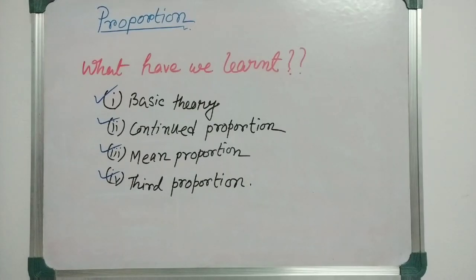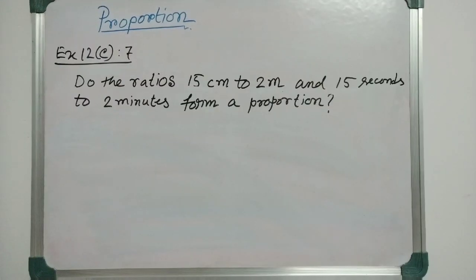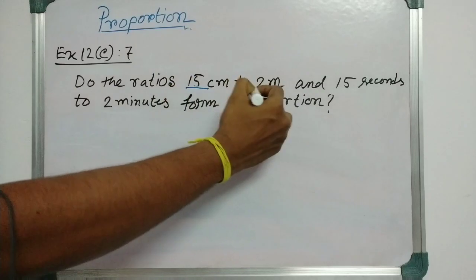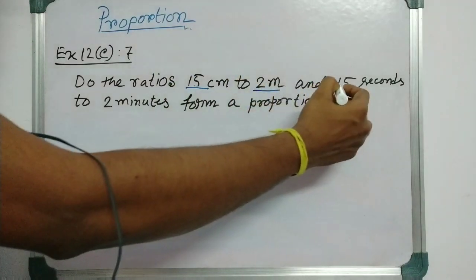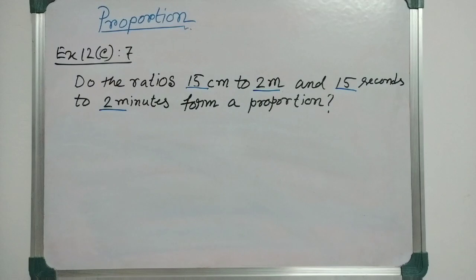Today we will solve some problems from exercise 12c of proportion. This is question number 7 from exercise 12c. The question is: do the ratios 15cm to 2m and 15 seconds to 2 minutes form a proportion?